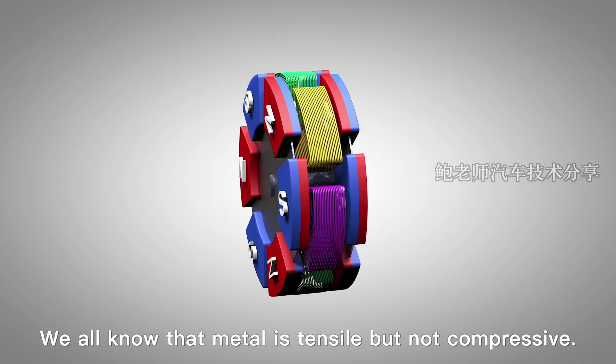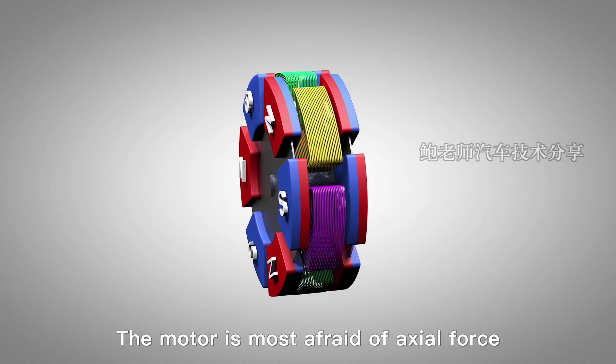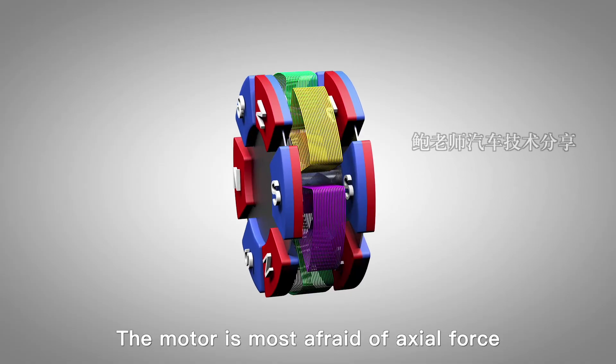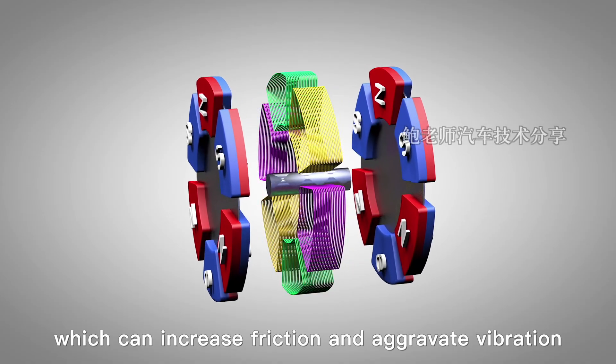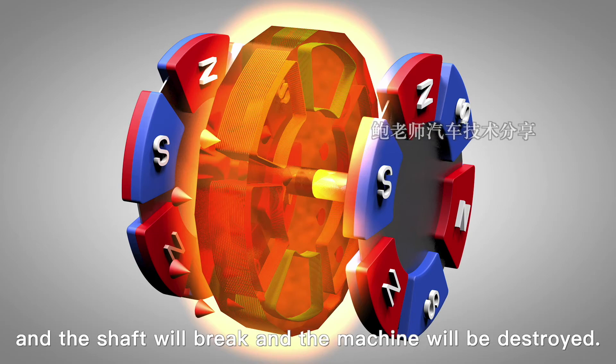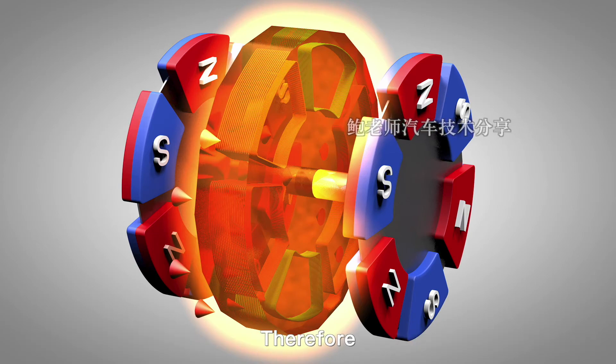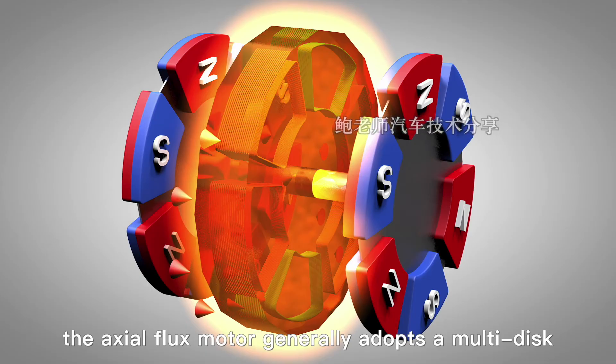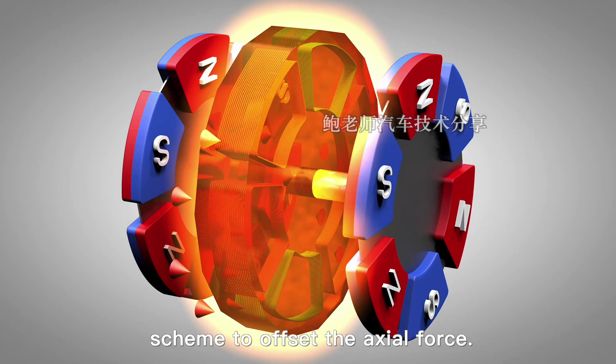We all know that metal is tensile but not compressive. The motor is most afraid of axial force, which can increase friction and aggravate vibration, or cause bearing misalignment and fall off, and the shaft will break and the machine will be destroyed. Therefore, the axial flux motor generally adopts a multi-disc scheme to offset the axial force.